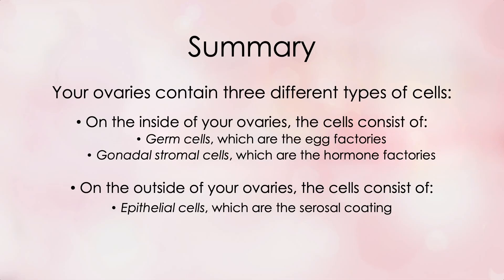I know this lesson seems elementary, but believe me it will become more complicated — and if I didn't start with the simple stuff, you would never understand the complex stuff. So your summary for today: your ovaries contain three different types of cells. On the inside — germ cells, which are the egg factories, and gonadal stromal cells, which are the hormone factories. On the outside — epithelial cells, which are the serosal coating.